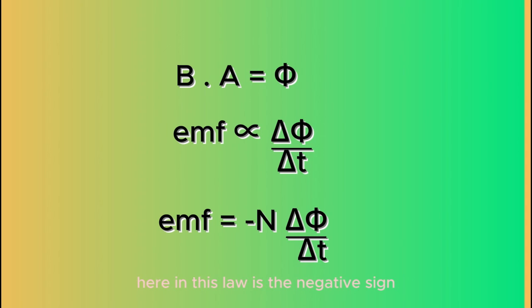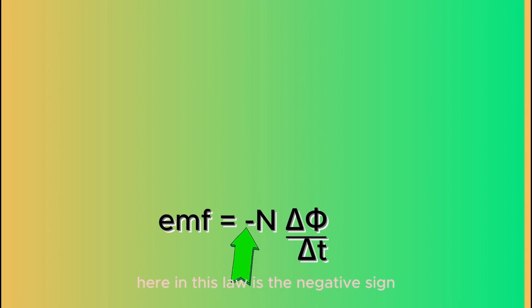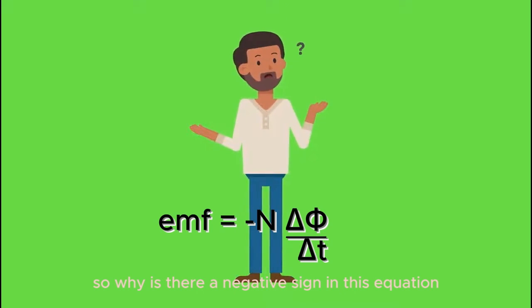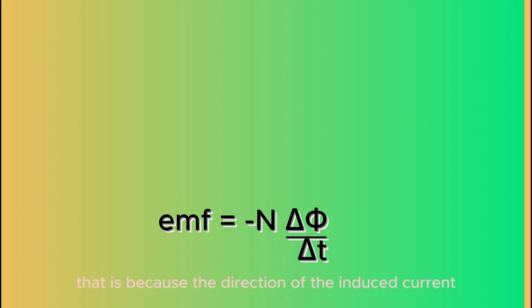But an important thing to note here in this law is the negative sign. So, why is there a negative sign in this equation? That is because the direction of the induced current.